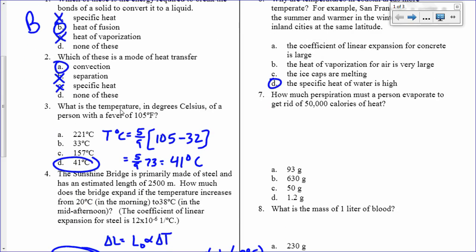How much perspiration must a person evaporate to get rid of 50,000 calories of heat? Q is equal to M times the latent heat of vaporization. So I want to know what is M. So M is equal to Q over L_v. That's 50,000 calories. That's the amount of heat that you want to get rid of from your body. Like your body is overheating, and you need to get rid of that amount of energy. And then the latent heat of vaporization for water is on your equation sheet. For water,